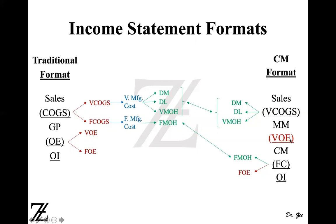You can combine variable cost of goods sold and variable operating expenses together, so sales minus variable cost gives you contribution margin. In the traditional format, cost of goods sold has a variable component — variable cost of goods sold — and a fixed component — fixed cost of goods sold. Variable cost of goods sold is essentially variable manufacturing cost, and fixed cost of goods sold is fixed manufacturing cost, which is fixed manufacturing overhead.